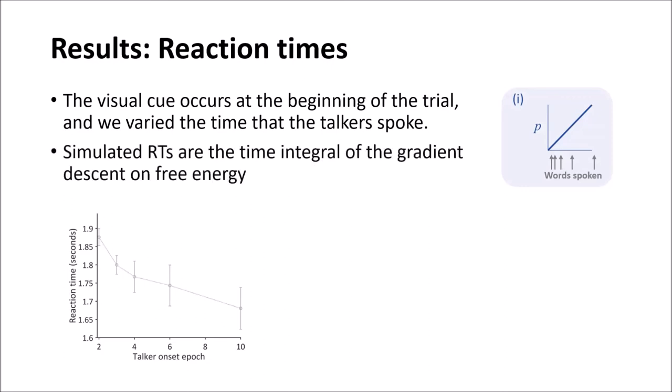And our simulated reaction time was the time integral of the gradient descent on free energy. This means that if the model takes longer to make the inference about which response is correct, then reaction times will be slower.